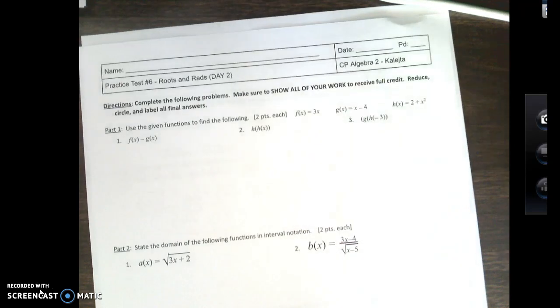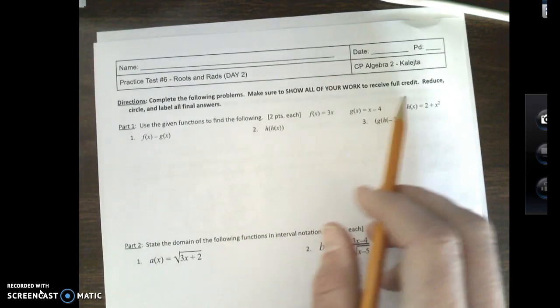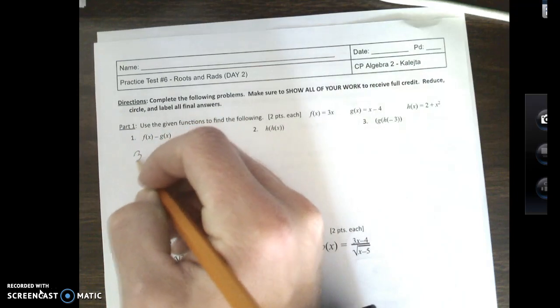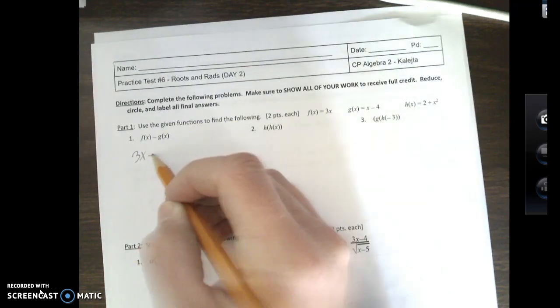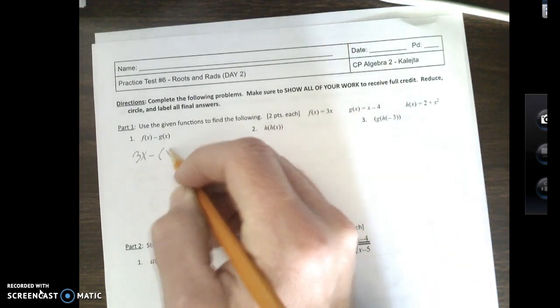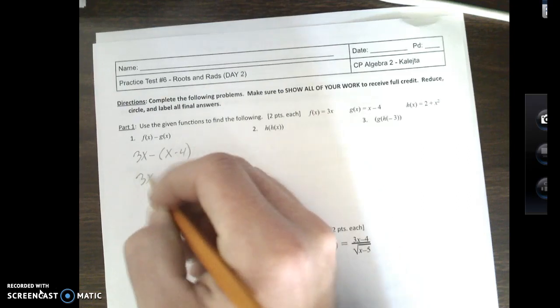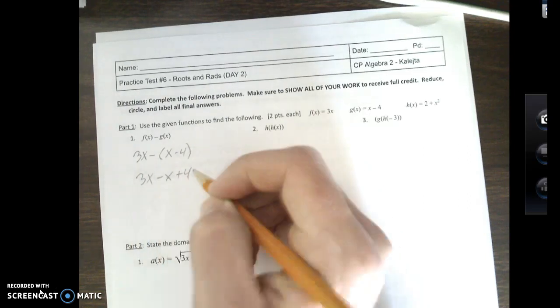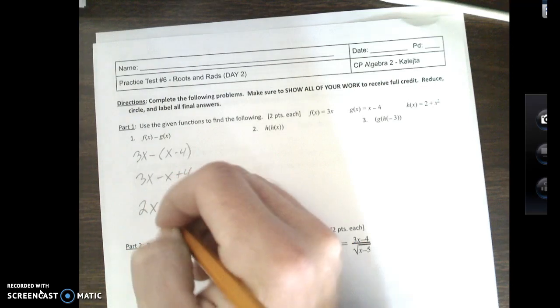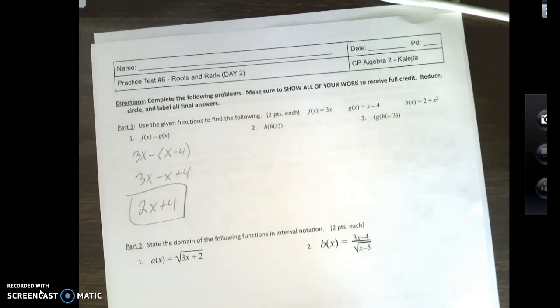f of x, g of x, h of x. So f of x minus g of x. All I'm doing is replacing f of x with 3x minus my g of x function is x minus 4. Please make sure you put that in parentheses. That is important because if I distribute that minus sign in, I get 3x minus x plus 4, which ends up being 2x plus 4. And you are done. Simple as can be.